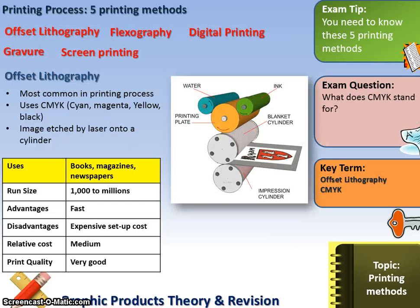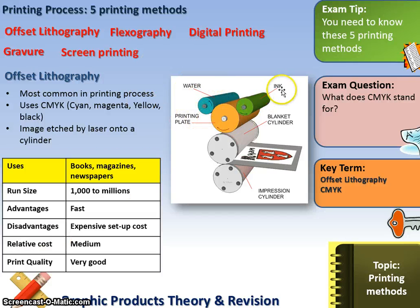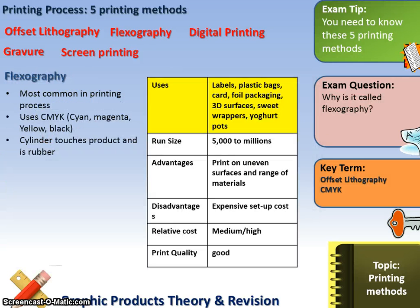Five types of printing methods: offset lithography has a run size of thousands to millions, is very fast, expensive to set up, and has excellent print quality. It uses cyan, magenta, yellow, and black etched onto a laser plate. The diagram shows a water printing plate, ink, blanket cylinder, and impression cylinder — all of which must line up precisely.